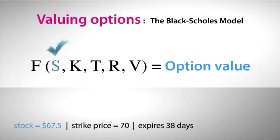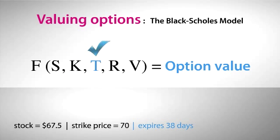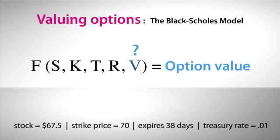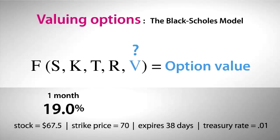Do we know the price of the stock? Yes, it's 67.5. We know the strike price of the option is 70. We know it expires in 38 days. And we know the treasury rate for the life of the option, which is practically zero. But what do we plug in for volatility? As we've seen, there's no one answer to what volatility really is. Do we use volatility for the past month? Past two months? Past six months? Unlike the other four variables that aren't subject to debate, volatility is more of an opinion, and traders will often disagree on how a stock will move in the future.